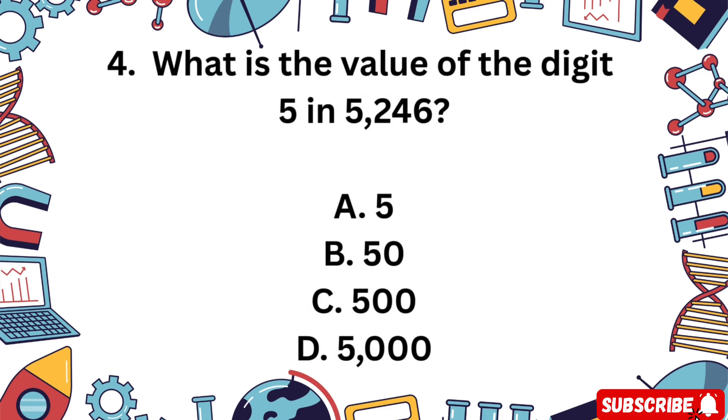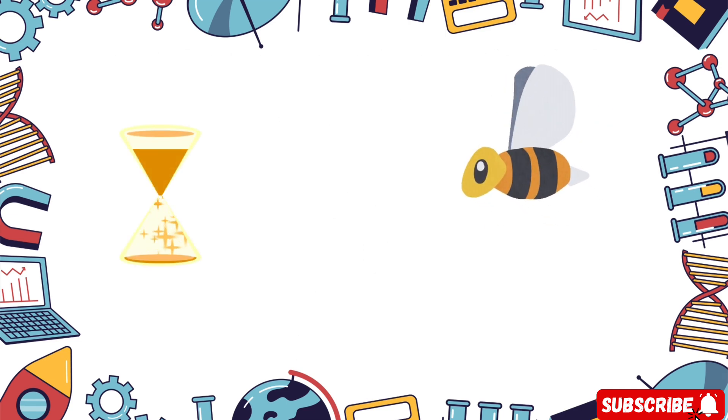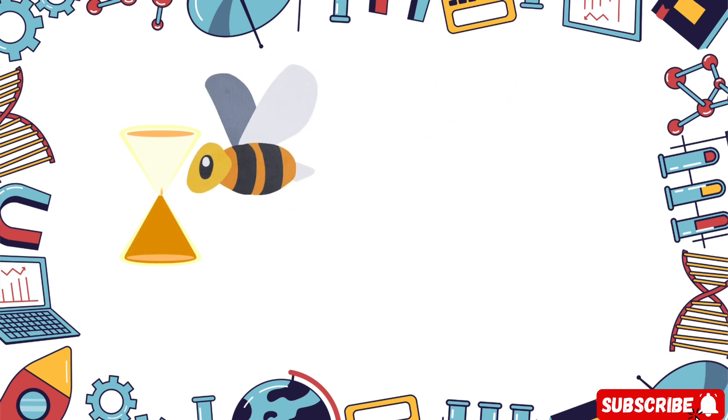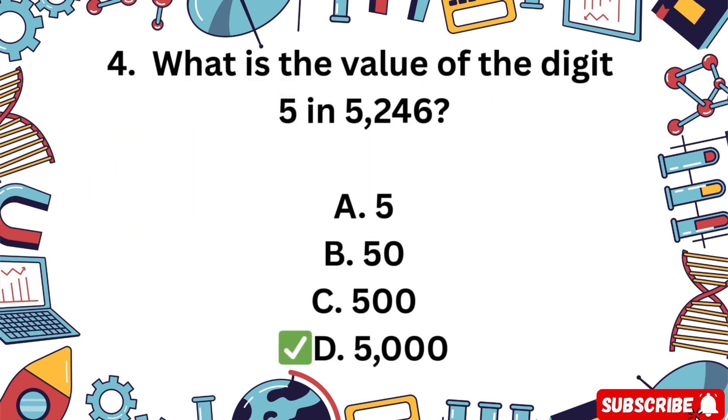Question 4. What is the value of the digit 5 in the number 5,246? A 5, B 50, C 500, D 5,000. The correct answer is D 5,000. The 5 is in the thousands place.